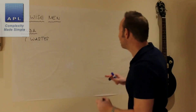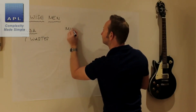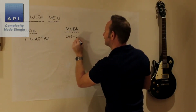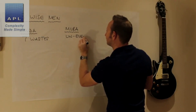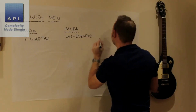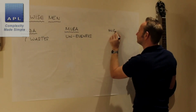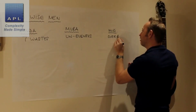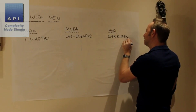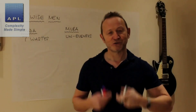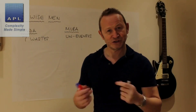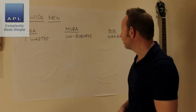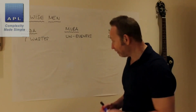Mura is unevenness. Muri is overburden — asking someone to do a work content that's unreasonable. It's about asking unreasonable things of your machines, your people, and your factory.